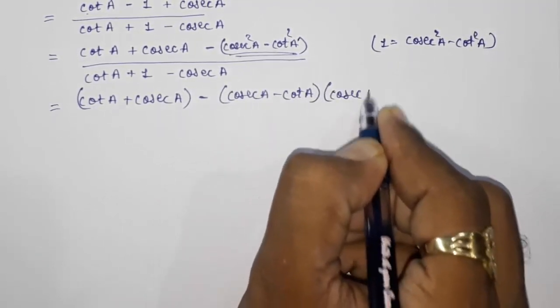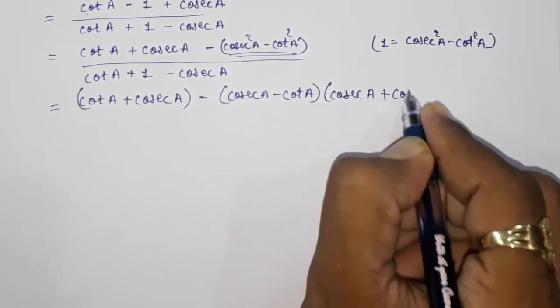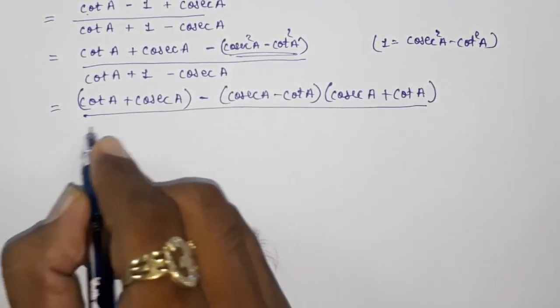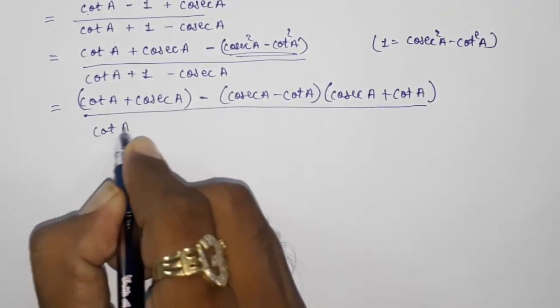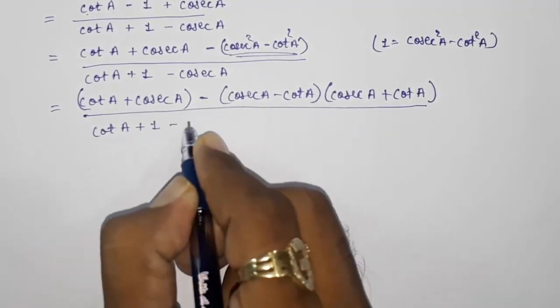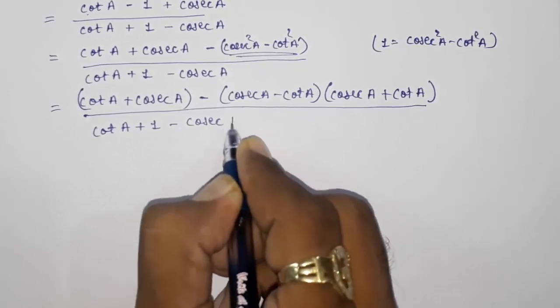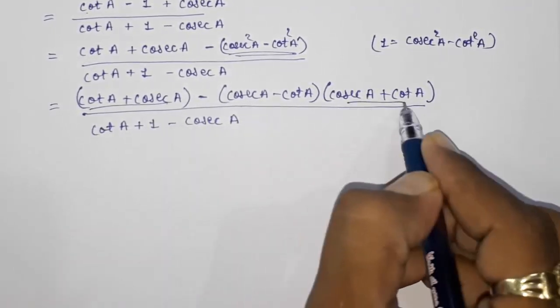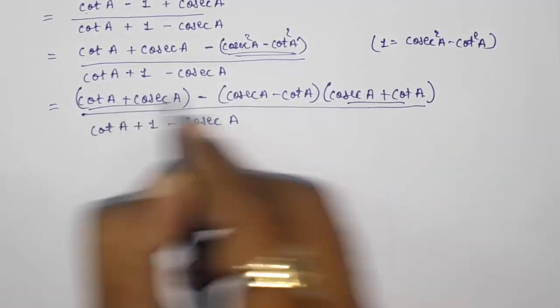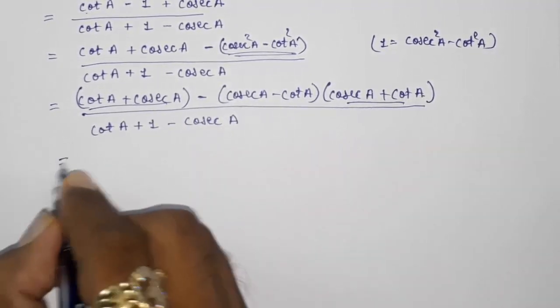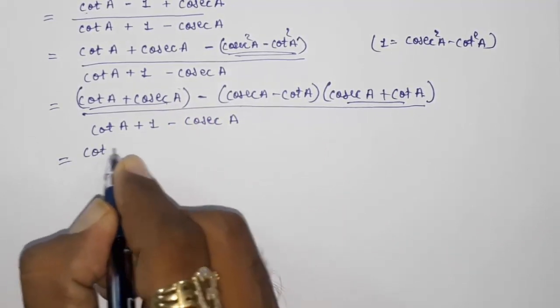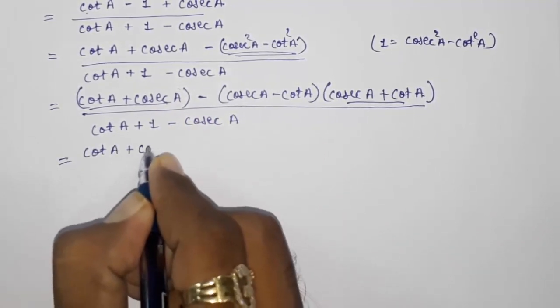cot A plus cosec A in the denominator will remain the same: cot A plus 1 minus cosec A. Now you can see cot A plus cosec A, cosec A plus cot A, this we can take out these two as common. I am underlining that so that you can come to know: cot A plus cosec A.